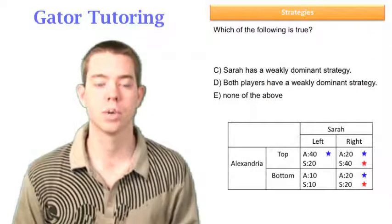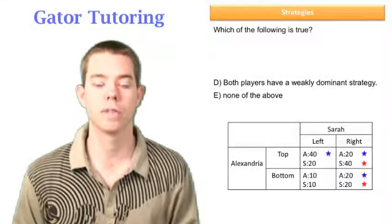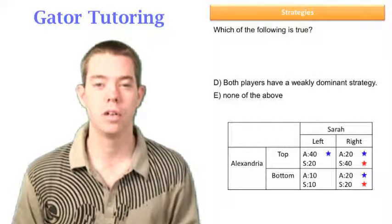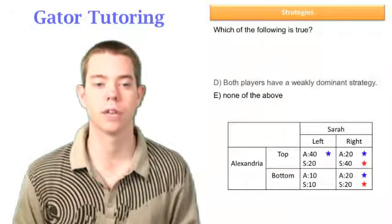C says Sarah has a weakly dominant strategy, but we just said she had a strongly dominant strategy. And D says both players have a weakly dominant strategy, and we know that Sarah has a strongly dominant strategy. Alexandria has a weakly dominant strategy, so we can cancel D out. And we're left with our answer to be E.